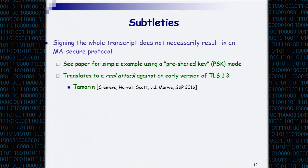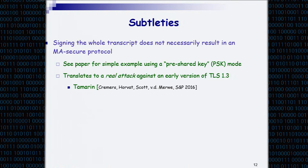There are many subtleties in this compiler and analysis. Maybe the main subtlety is that even if you sign the whole transcript, this compiler is not necessarily secure — that went against my own intuition. In the paper I show a very simple example using a pre-shared key protocol. I thought it was the type of thing that only convinces theoreticians, but actually a group working on formal proofs of TLS 1.3 found that attack independently, showing it was breaking a TLS 1.3 mechanism at the time. So it's not just theoretical subtleties — there is something real here.